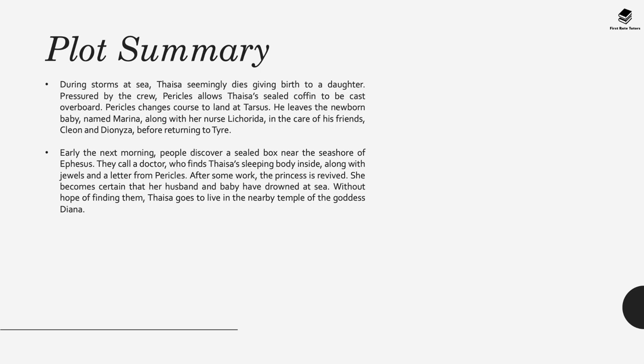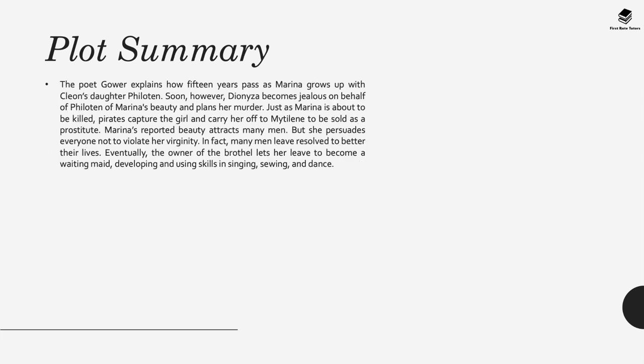Early the next morning, people discover a sealed box near the seashore of Ephesus. They call a doctor who finds Thaisa's sleeping body inside, along with jewels and a letter from Pericles. After some work, the princess is revived. She becomes certain that her husband and baby have drowned at sea and, without hope of finding them, Thaisa goes to live in the nearby temple of the goddess Diana. The poet Gower explains how 15 years pass as Marina grows up with Cleon's daughter Philotene.